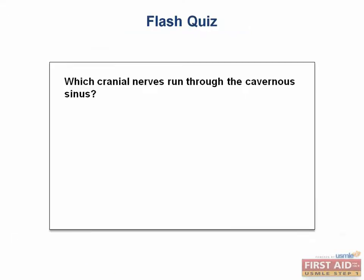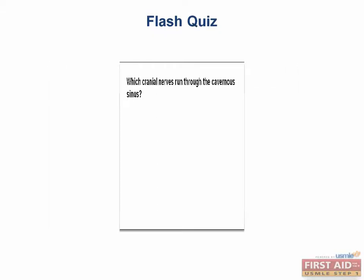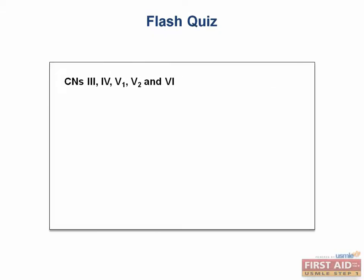Flash quiz: which cranial nerves run through the cavernous sinus? The answer is cranial nerves 3, 4, V1, V2, and 6.